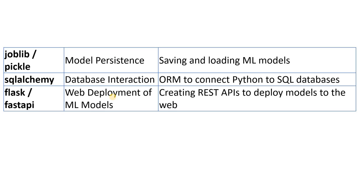For data handling, if you want to save and load machine learning models, Joblib or pickle would be helpful libraries. If you are working with database interactions — connecting Python to SQL databases — SQLAlchemy is the helpful library. And if you are creating APIs to deploy models to the web, Flask or FastAPI would be the most helpful.